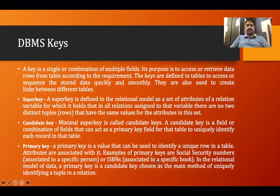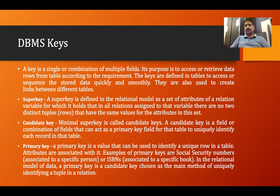The definition of a primary key: a primary key is a value that can be used to identify a unique row in a table. In a database management system, when we want to create any table, we should define a key, and that key is called the primary key. So a primary key is able to uniquely identify a row.